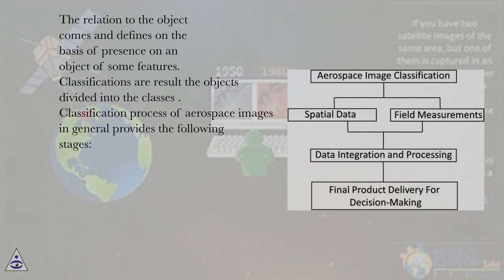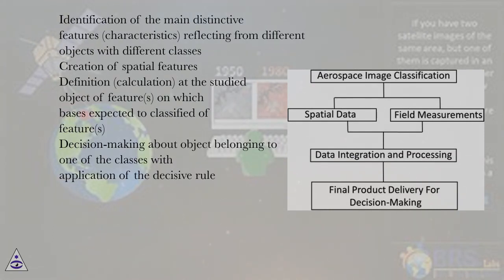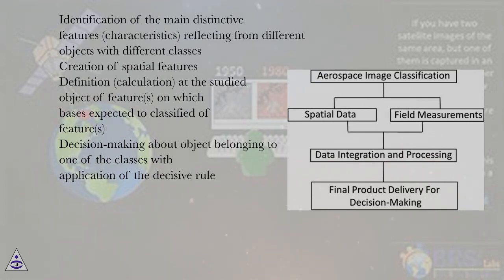The classification process of aerospace images in general provides the following stages: identification of the main distinctive features and characteristics reflecting from different objects with different classes; creation of spatial features; definition and calculation at the studied object of features on which basis it is expected to classify; and decision-making about object belonging to one of the classes with application of the decisive rule.